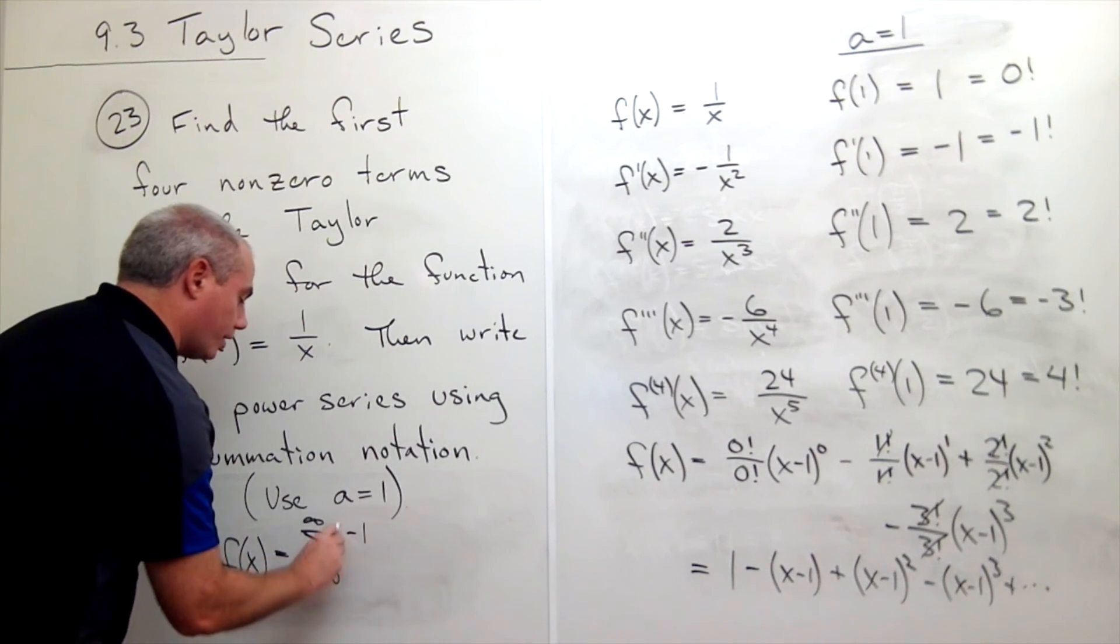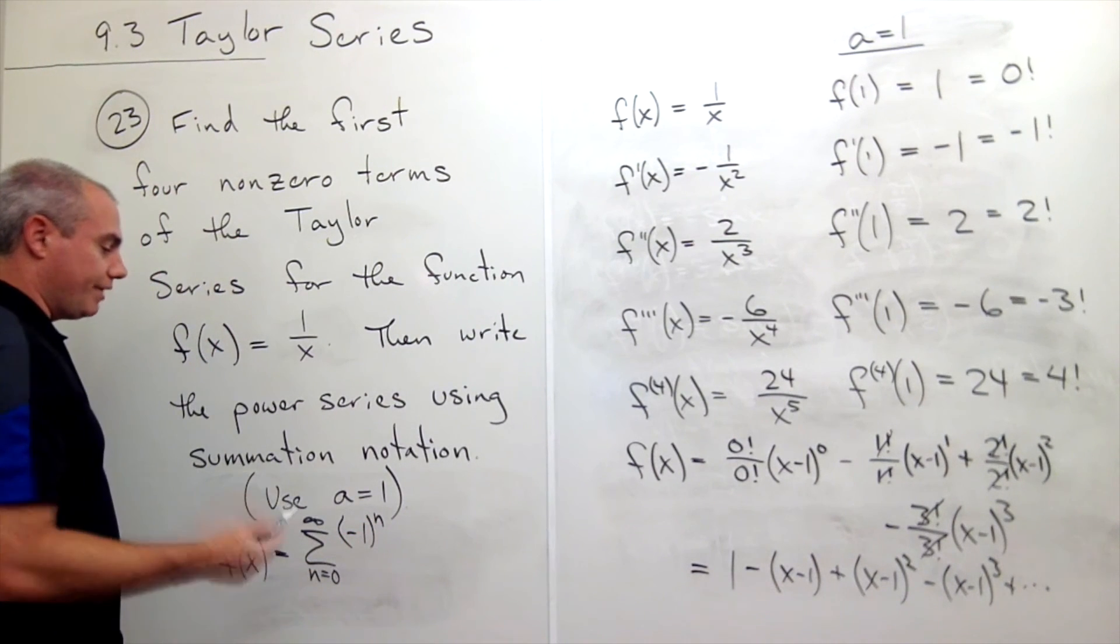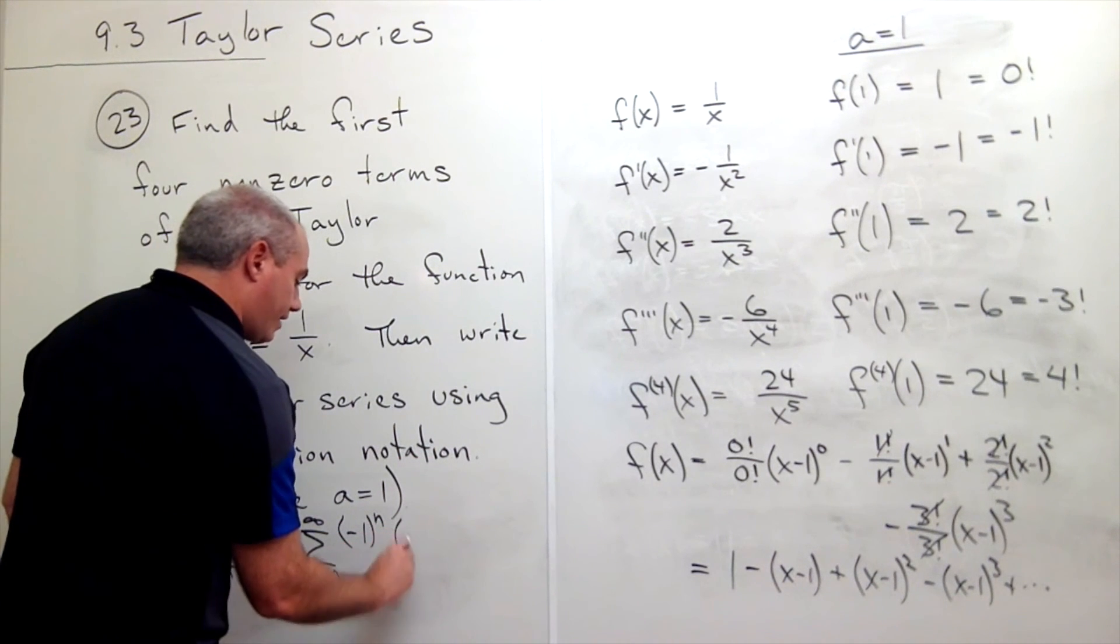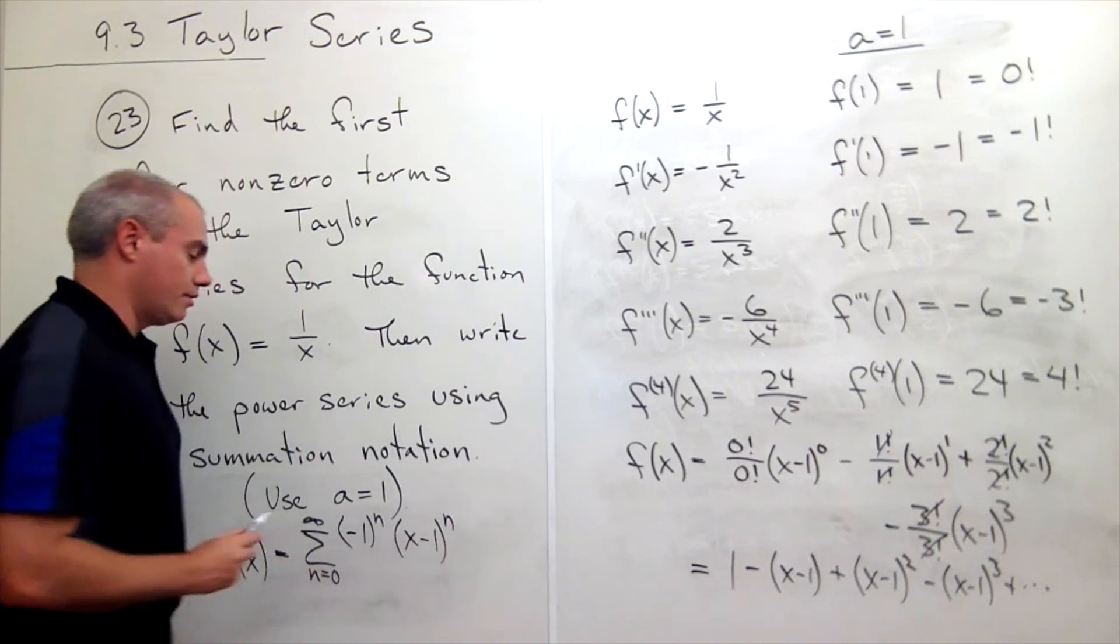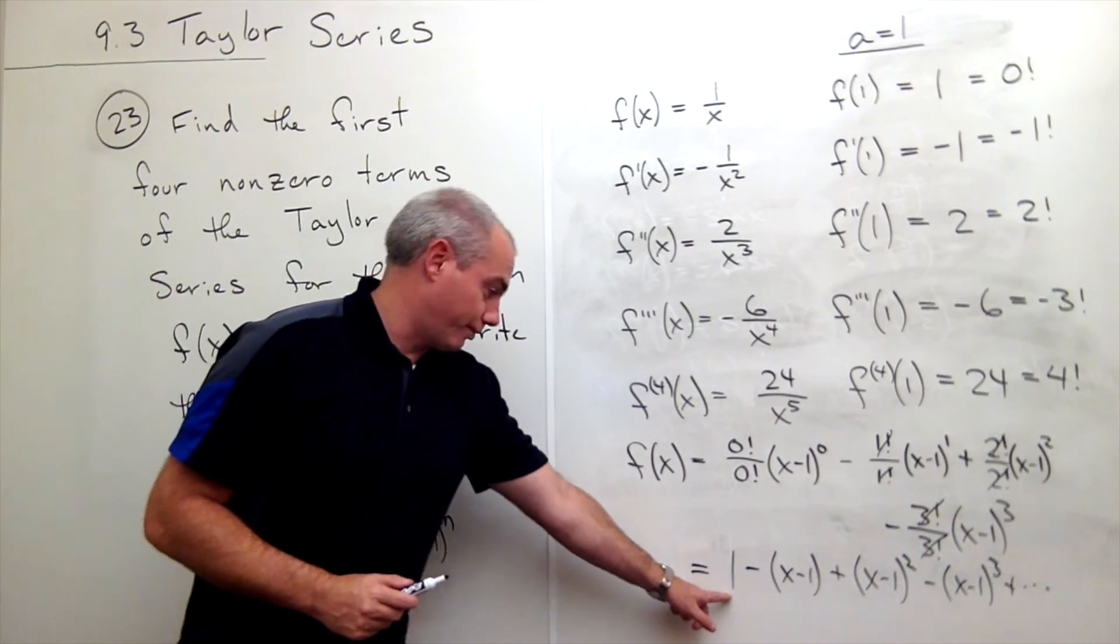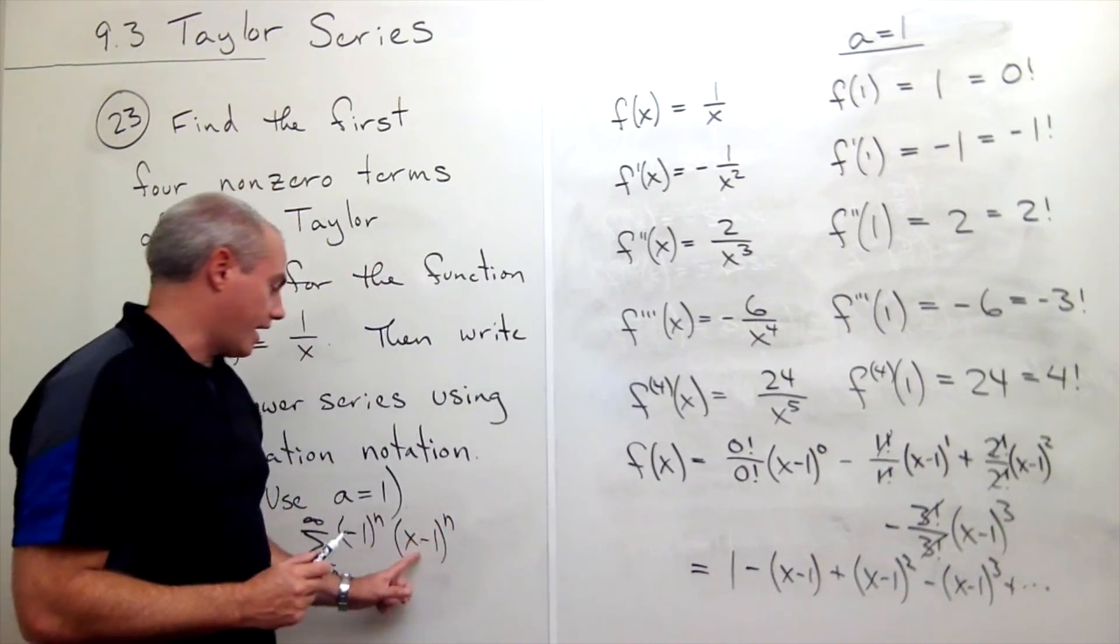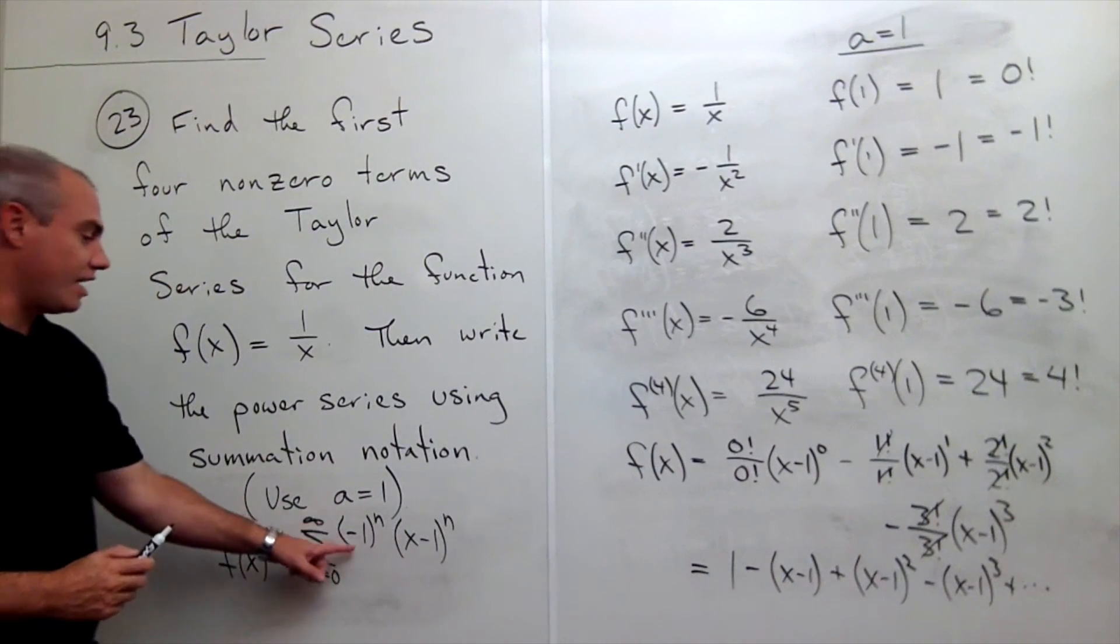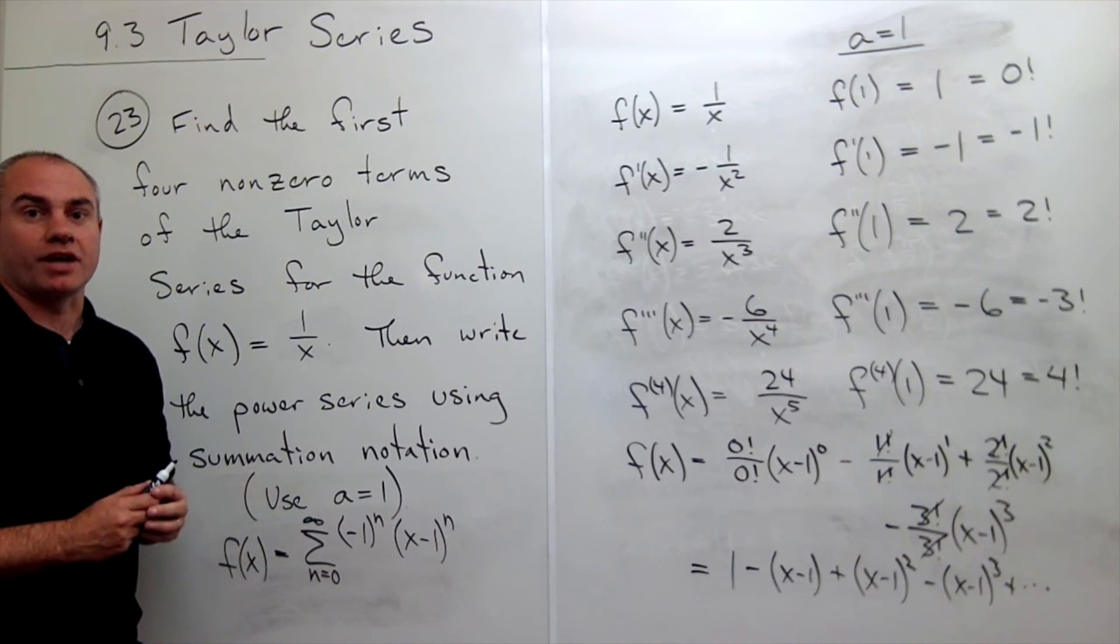But then I just am going to multiply that by x minus 1 to the n. So I get x minus 1 to the 0 in the first term, x minus 1 to the first here, x minus 1 to the second here, and so on. So it's just negative 1 to the n times x minus 1 to the n, and we're done.